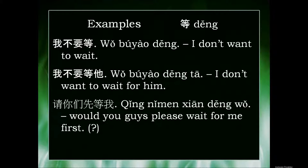The first example is 我不要等, which means I don't want to wait. But if we add a pronoun afterwards — 我不要等他 — that means I don't want to wait for him. So there's no word for 'for' in Chinese; 等 can mean both wait and wait for.